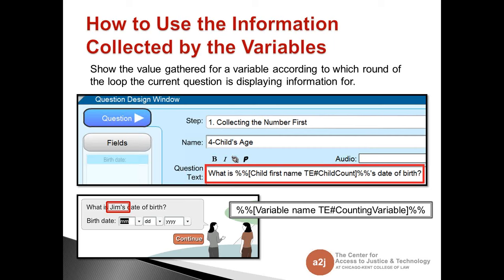Another way to use variable macros is to show the value gathered for a specific variable according to which round of the loop you're on — for personalization. Instead of asking 'What is your first child's birth date?', you can make it personal: 'What is Jim's date of birth?' The variable macro formula for this is: %% [variable name TE # counting variable] %% — percent sign, percent sign, open bracket, variable name TE, then the pound or hashtag symbol, the name of your counting variable, close bracket, percent sign, percent sign.